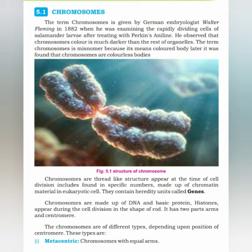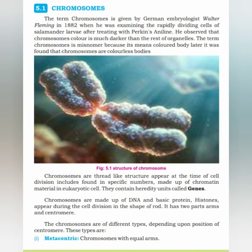Chromosomes appear during cell division in the shape of a rod, and have two parts: arms and centromere. During mitosis, chromosomes are separated. They are first replicated — copies are made — and then they segregate, moving to different sides of the dividing cell.